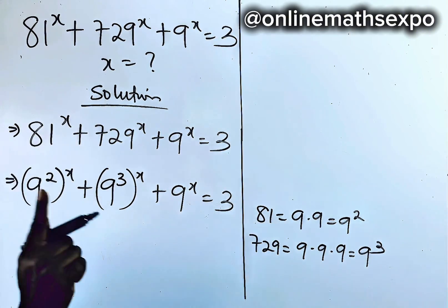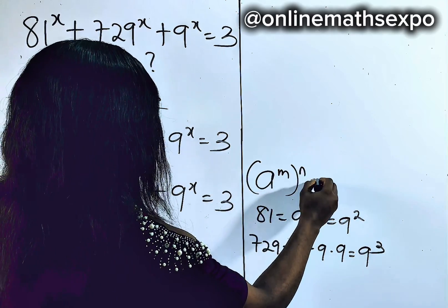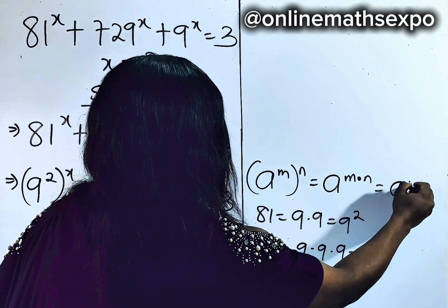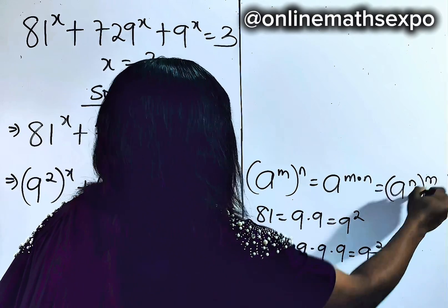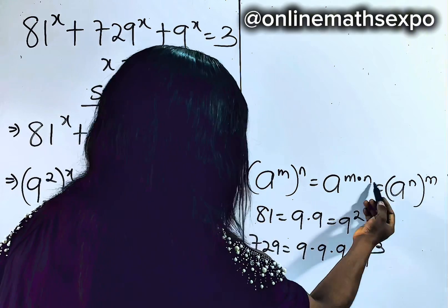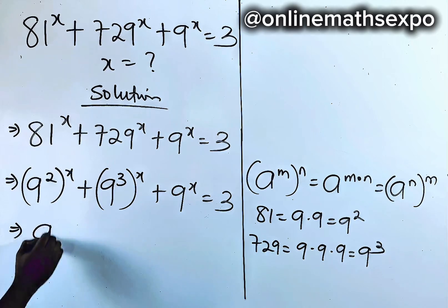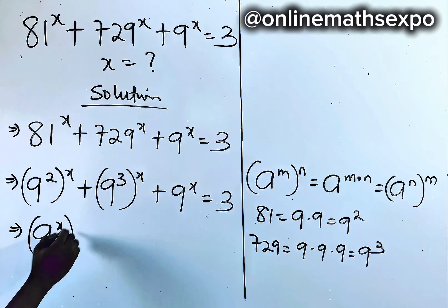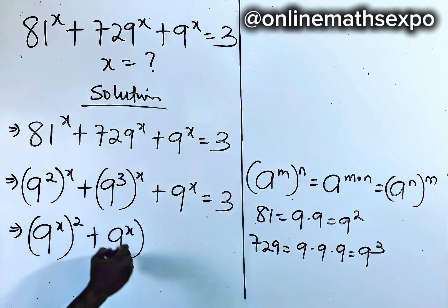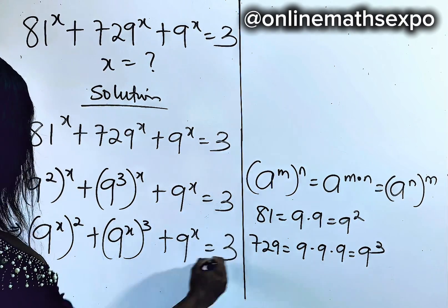Now, remember that for every a to the power of m, raised to power n, it equals a to the power of m multiplied by n — which is the same as a to the power of n raised to power m. You can switch the powers and they give you the same thing. So here we switch our powers: we have 9 to the power of x, raised to power 2, plus 9 to the power of x, cubed, plus 9 to the power of x, equal to 3.